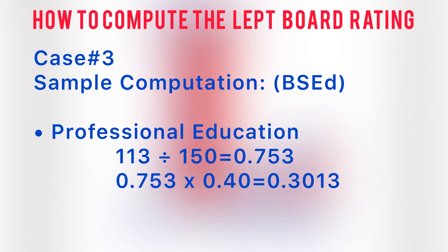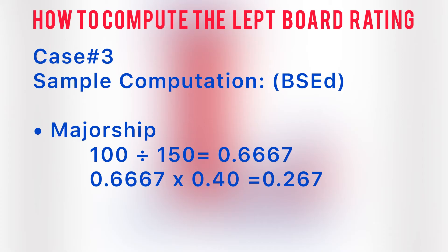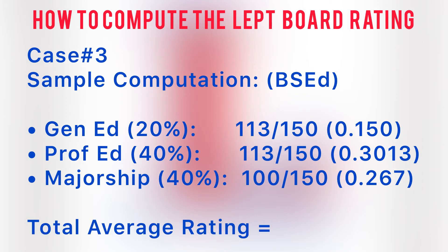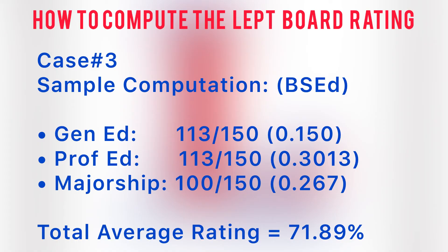For professional education: 113 divided by 150 equals 0.753 times 0.40 equals 0.3013. And for majorship: 100 divided by 150 equals 0.6667 times 0.40 equals 0.267. Add together the computed ratings of general education (0.150), professional education (0.3013), and majorship (0.267). The total is 0.7189 or 71.89%. This rating is failed.